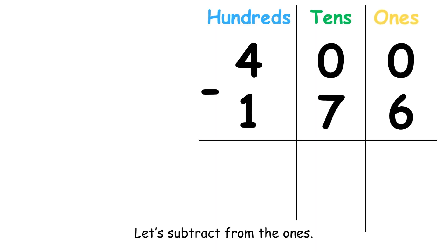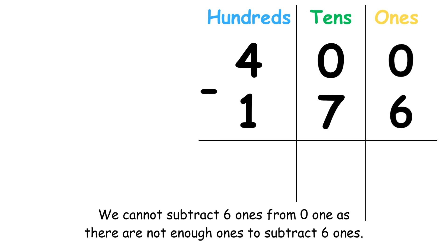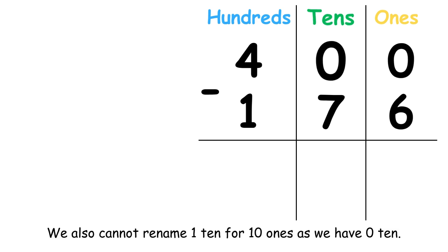Let's subtract from the ones. We cannot subtract 6 ones from 0 as there are not enough ones to subtract 6 ones. We also cannot rename 1 ten for 10 ones as we have 0 ten.